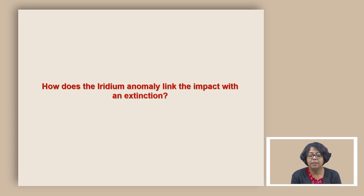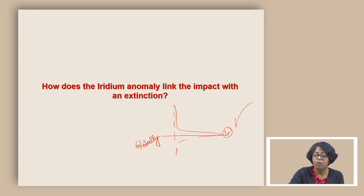How does the iridium anomaly link the impact with an extinction? We found that between Cretaceous and Paleogene rock record, the boundary between these two had a very high concentration of iridium and this high concentration of iridium globally shows that somehow the overall input of iridium has increased globally during this time. Iridium is not available on earth's crust and the only way we can find the high concentration of iridium throughout the world in a specific time is if iridium is brought from outside the earth.